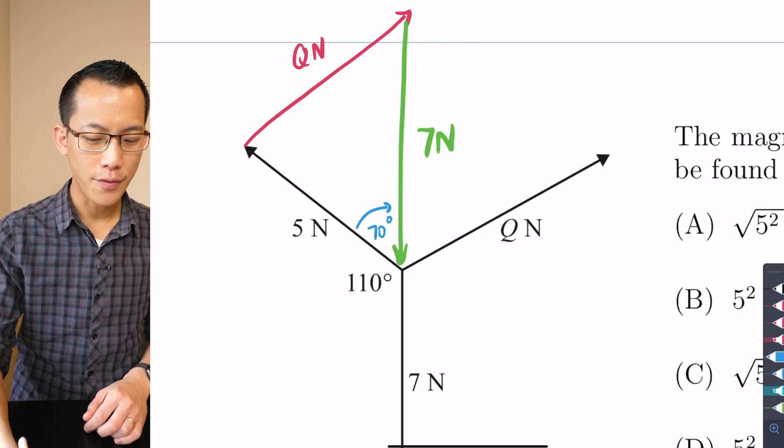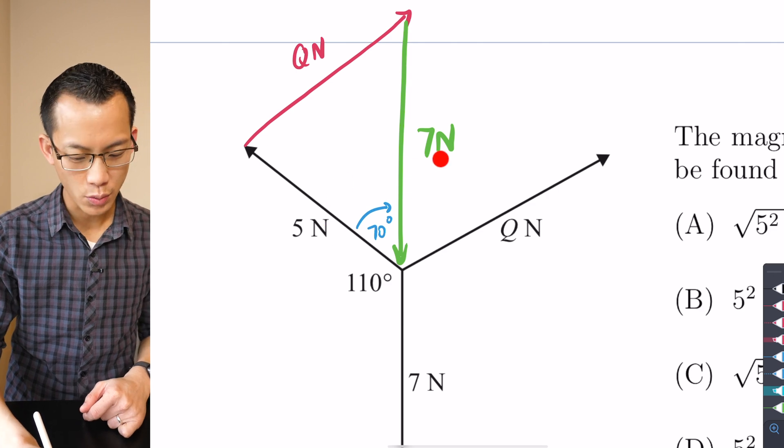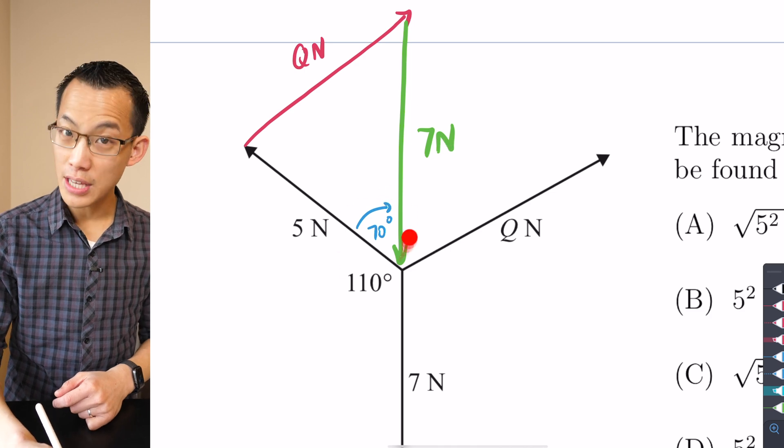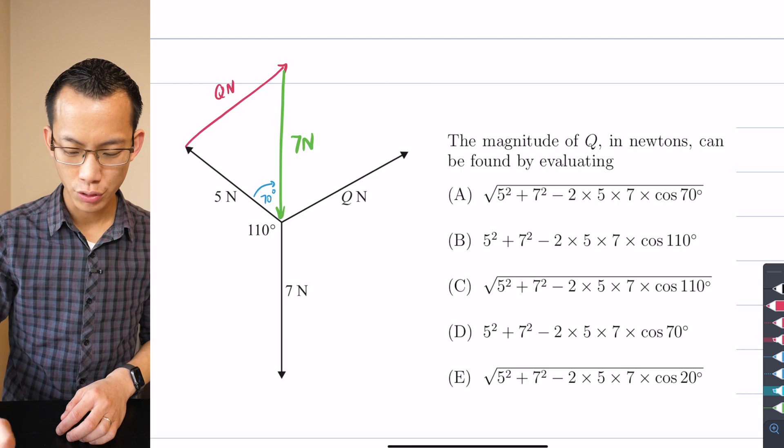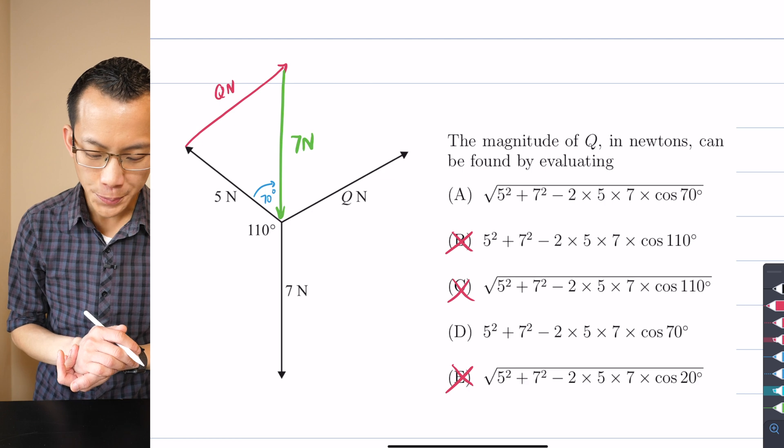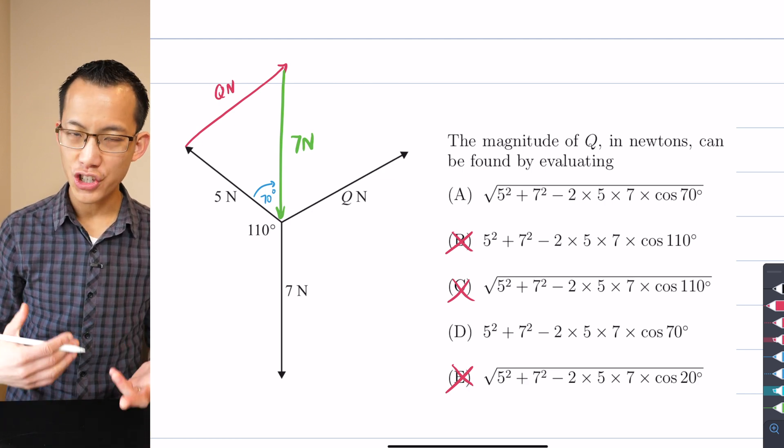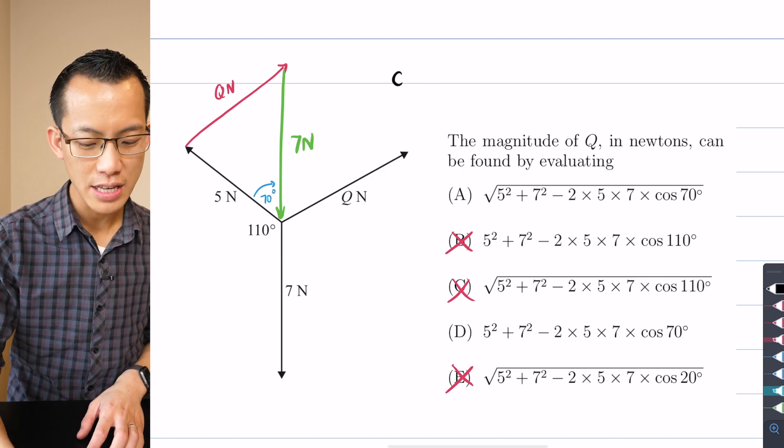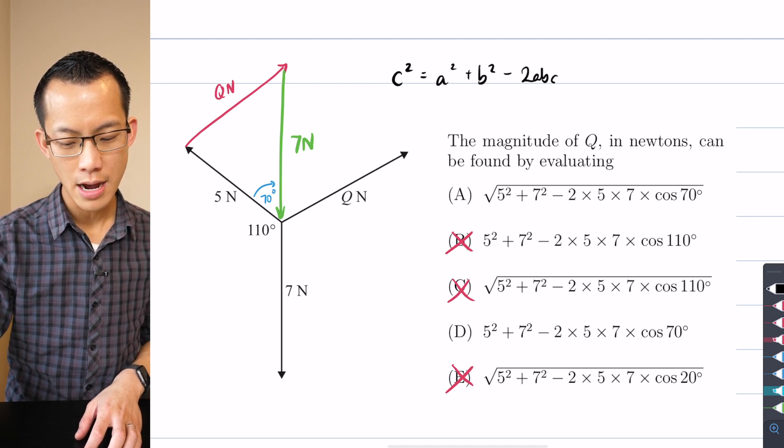I'm pretty much done at this point. I'm trying to find Q, that's the unknown, so 5 squared plus 7 squared minus 2 times 5 times 7 cos of 70 degrees. When I have a look at my answers here, I can exclude B and C and E, they don't have the appropriate angle. Between A and D which is the right one?